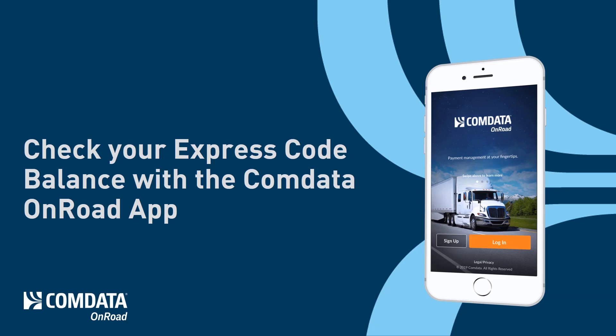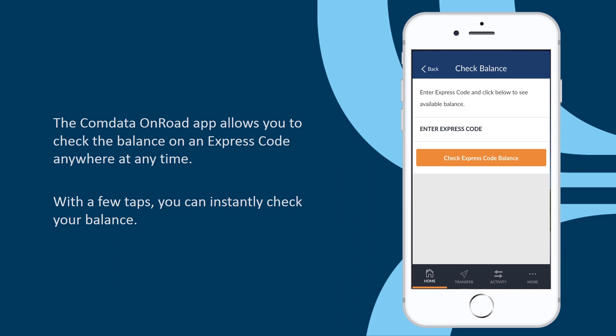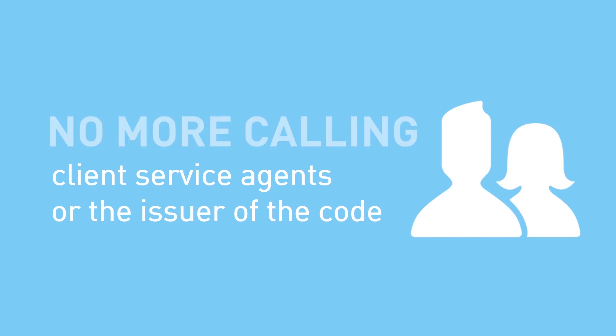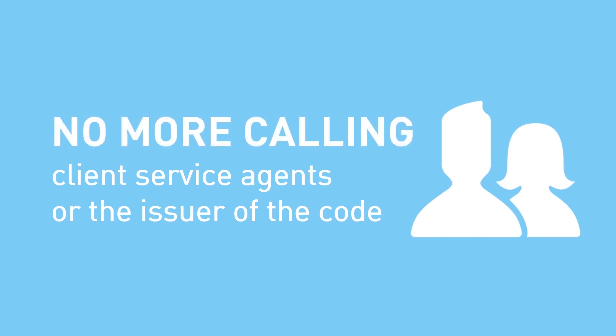Check your Express Code balance with the OnRoad app. The CommData OnRoad app allows you to check the balance of an Express Code anywhere at any time. With a few taps, you can instantly check your balance. No more calling client service agents or the issuer of the code.